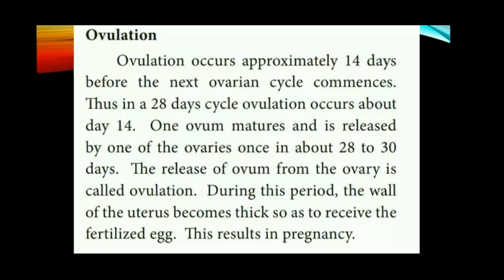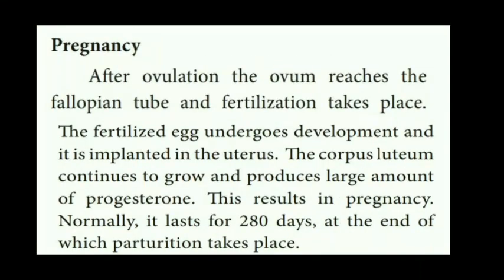Next is pregnancy. After ovulation, the ovum reaches the fallopian tube and fertilization takes place there. The fertilized egg undergoes development and is implanted in the uterus. The empty Graafian follicle is converted into a partial endocrine gland called the corpus luteum, which produces a large amount of progesterone hormone. Normally, pregnancy lasts for 280 days, at the end of which parturition — childbirth — takes place.